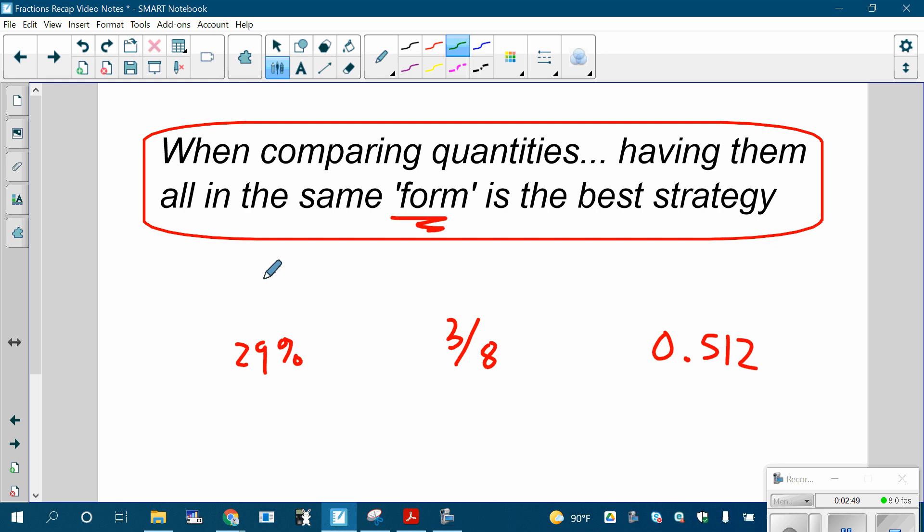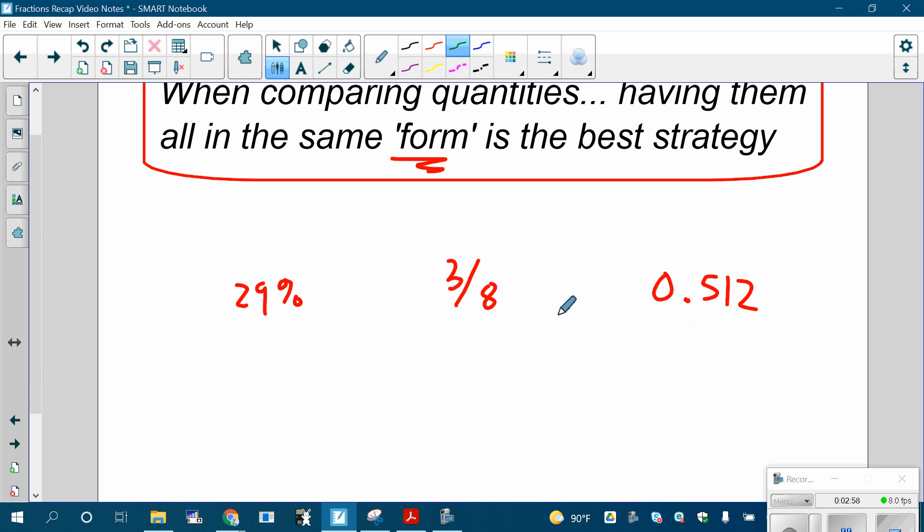So to give you a little example, my kind of general rule of thumb, this doesn't always work, but when you're comparing quantities, having them all in the same form is a lot of times the best strategy. So when I'm trying to see which of these is biggest and which is in the middle and which is smallest, and I'm comparing a percent, fraction, and a decimal, it might be helpful to get them all into fraction form. If you can do this without doing that, cool. But if you want a technique that will likely help you, getting them all in the same form and maybe getting them all in fraction form might help you.